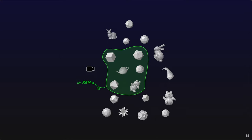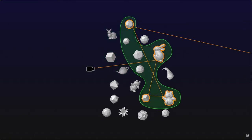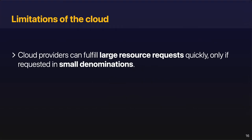For example, in this case, tracing the blue path requires bringing these two additional objects into memory. And now that I'm tracing a different path, a new set of objects has to be loaded. As a result, path-tracing of large scenes is typically performed on large servers that contain hundreds of gigabytes or even terabytes of RAM. Now here's the catch: cloud providers can quickly fulfill large resource requests only if they are requested in small denominations.